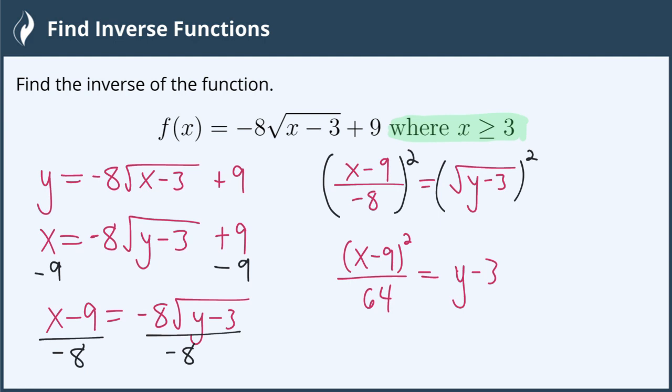We just have one step left to get y by itself, and that's to add the 3 to both sides. So now we have (x-9)²/64 + 3 = y.